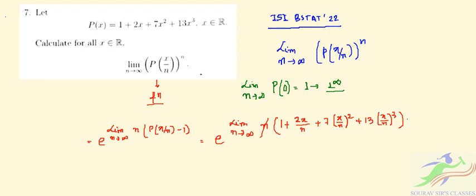First of all, this minus 1 and minus 1 will cancel out. And next, n will cancel out with this n, and n² will cancel out, and n³ will cancel out. So if you write this...